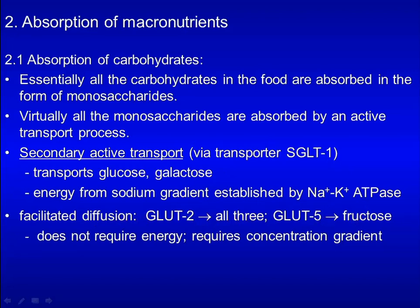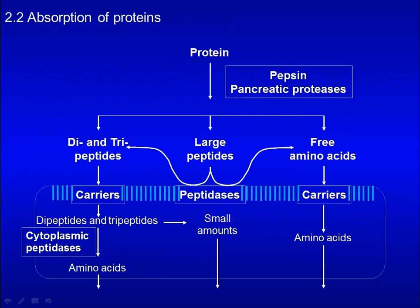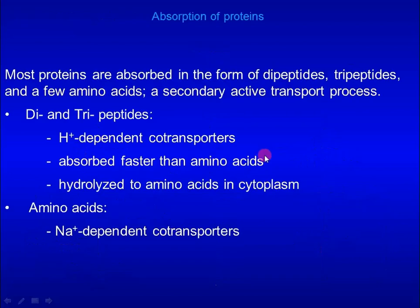Proteins are absorbed in the form of dipeptides, tripeptides, and amino acids. Dipeptides and tripeptides are absorbed through proton-dependent co-transporters, while amino acids are absorbed by sodium-dependent co-transporters. Small peptides are absorbed faster than amino acids. This information is summarized in this slide.